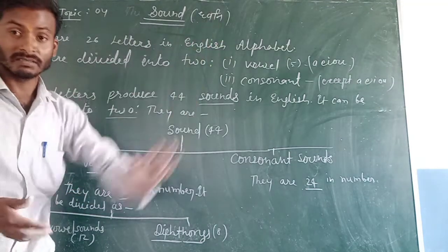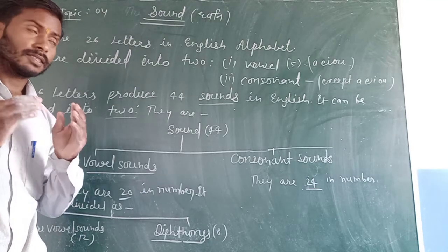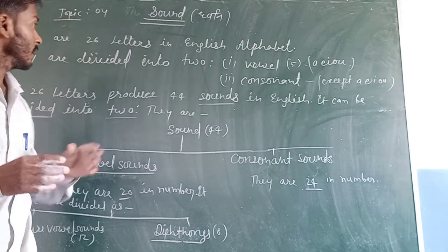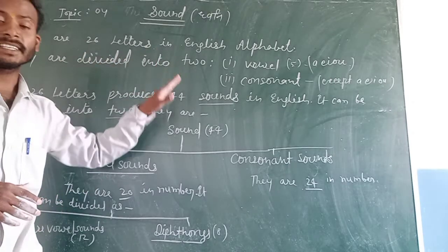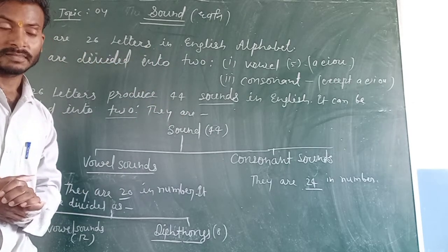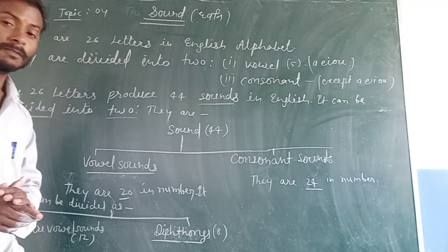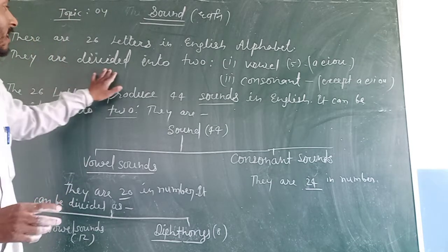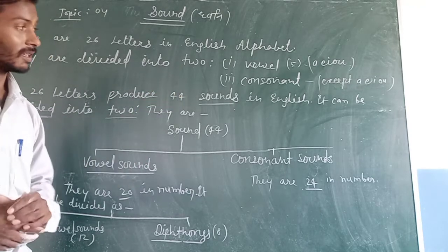Dear student, in English, there are 26 letters in English alphabet, you know. They are divided into two categories, first vowel and consonant.